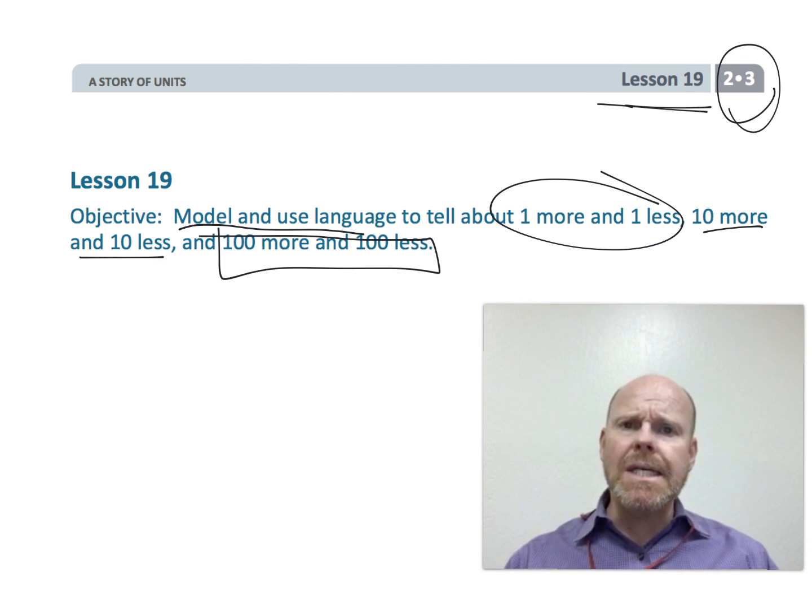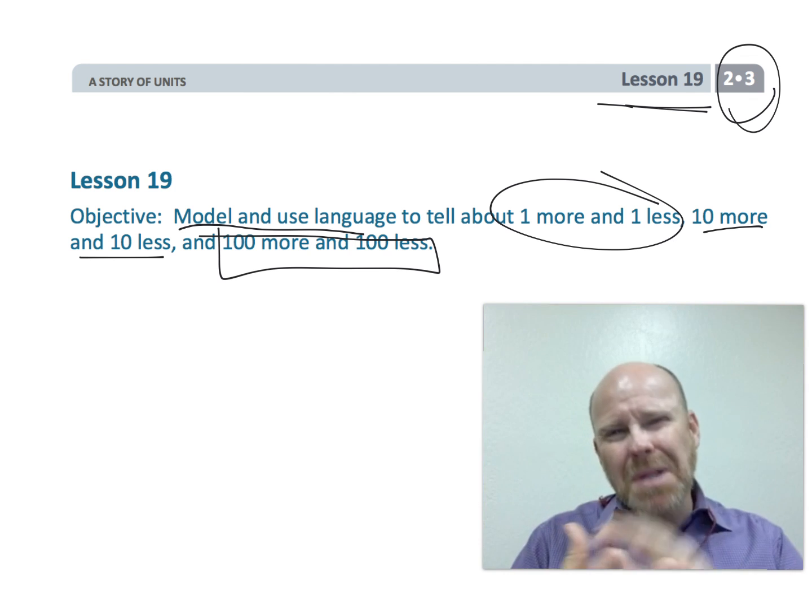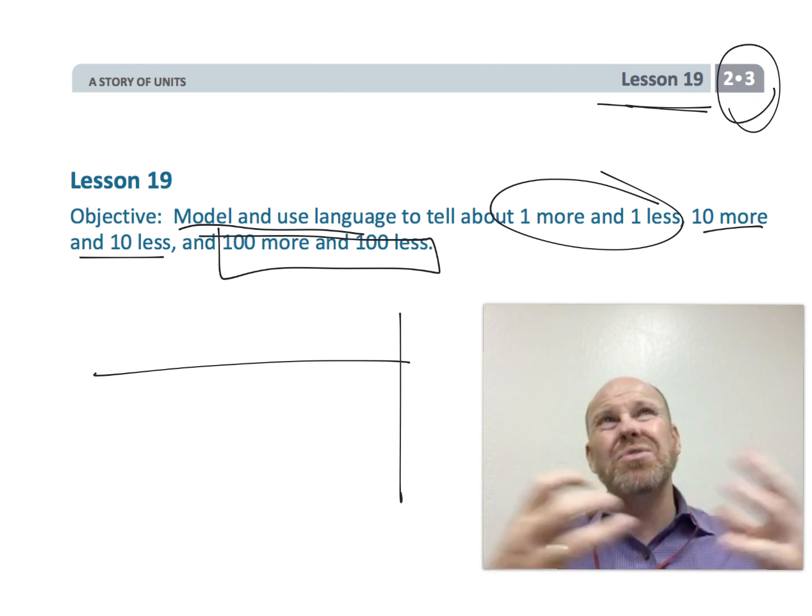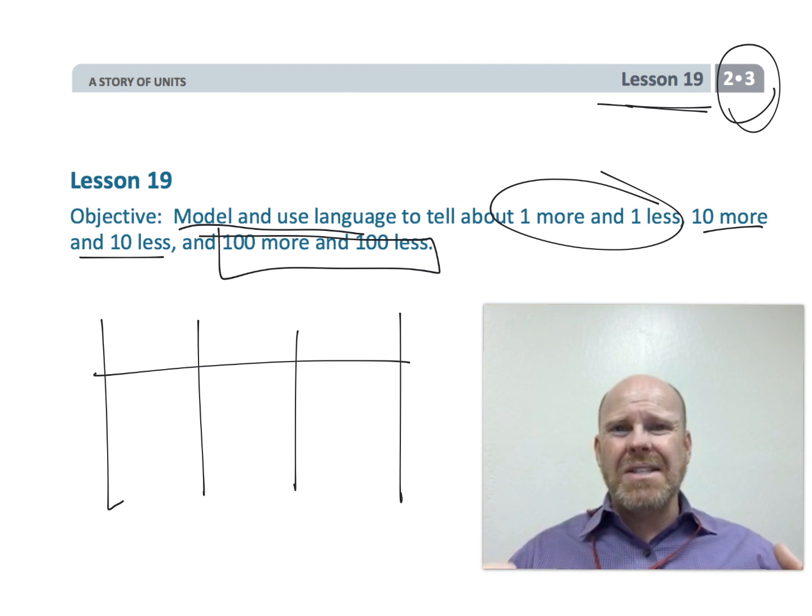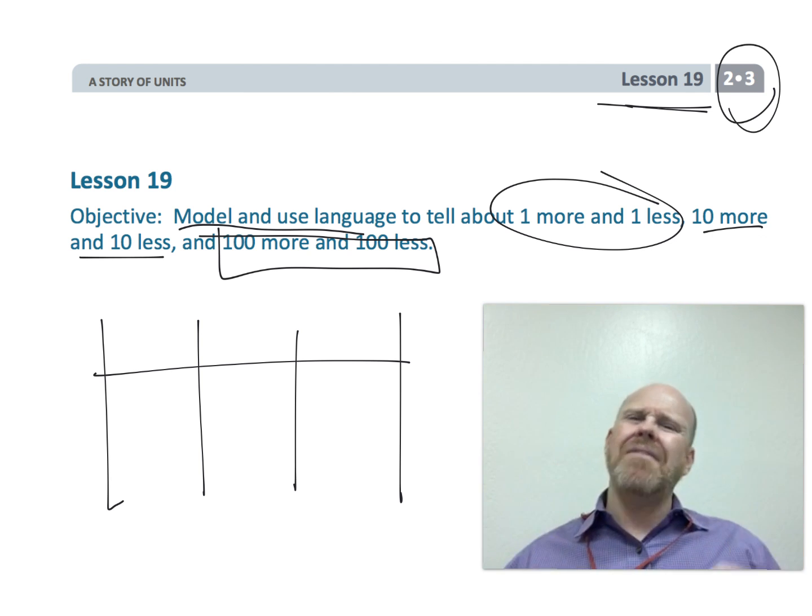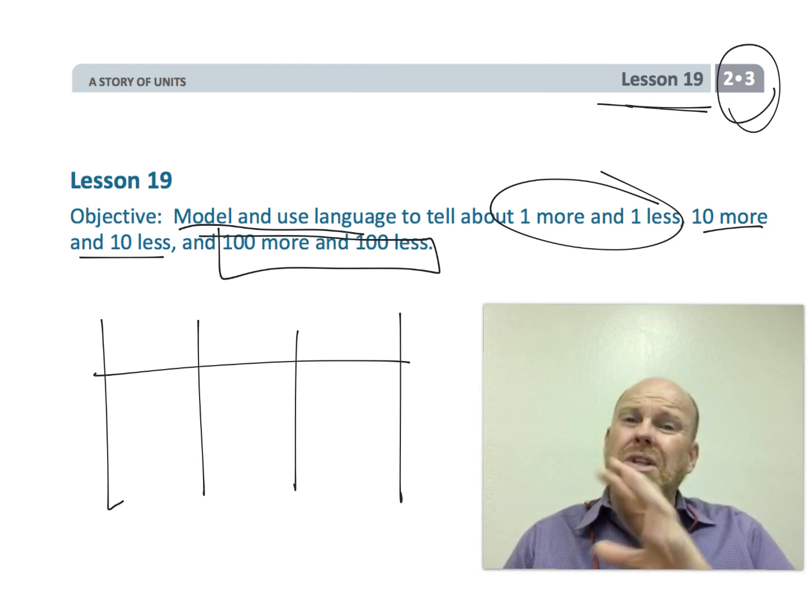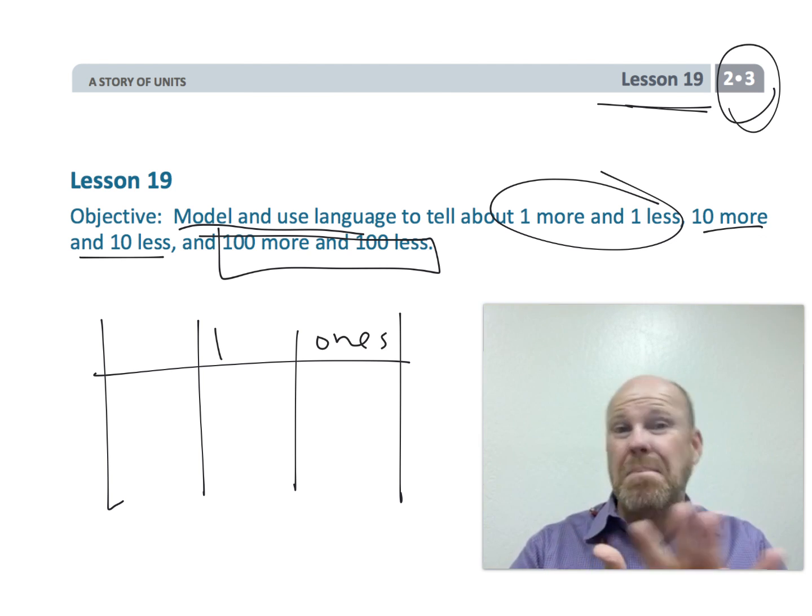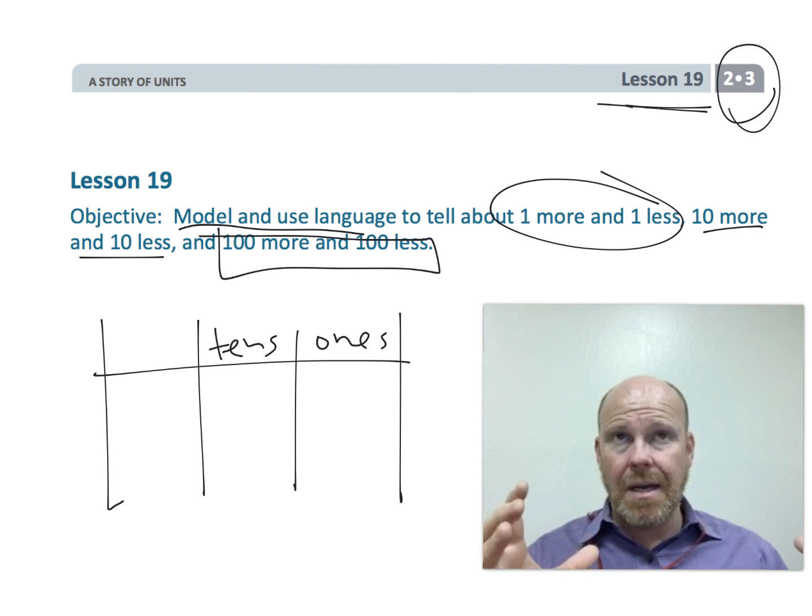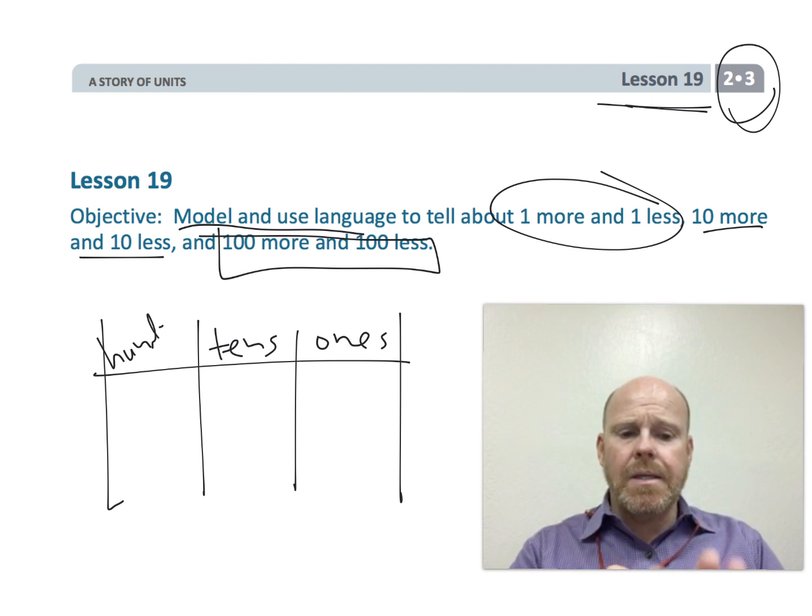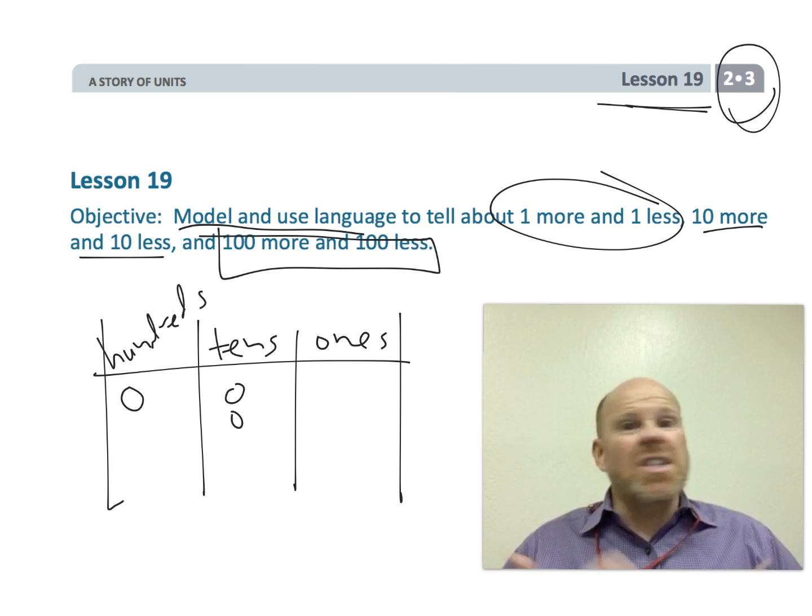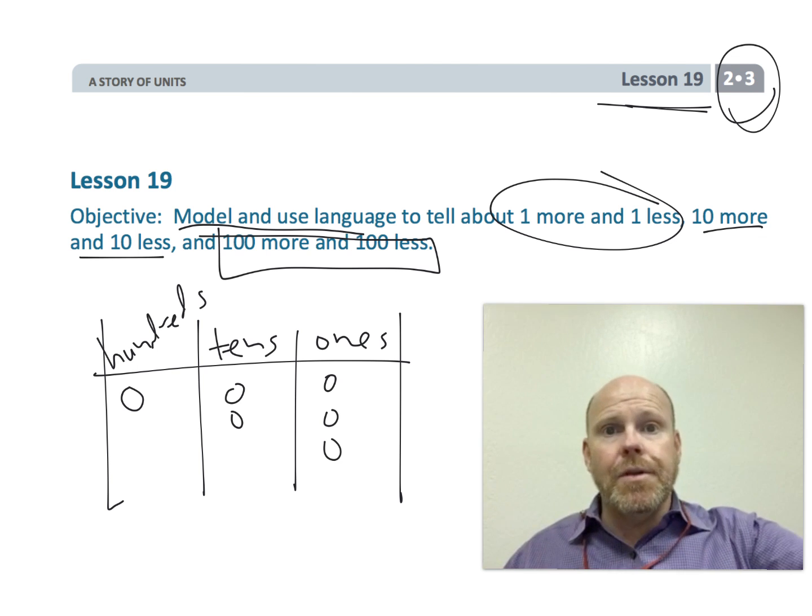The idea for this lesson is that we're going to be using place value disks so that we do something more than just have our students memorize numbers. We're going to start with the physical representation, move to some sort of pictorial representation, and ultimately our students are going to internalize this and do it from an abstract point of view.